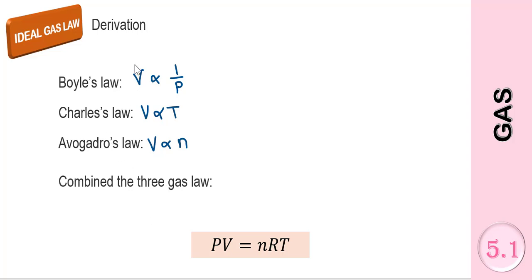By combining these three gas laws, we have a volume here for each gas law. So we know that the volume is directly proportional to the number of moles of the gas and temperature, and it is inversely proportional to the pressure.